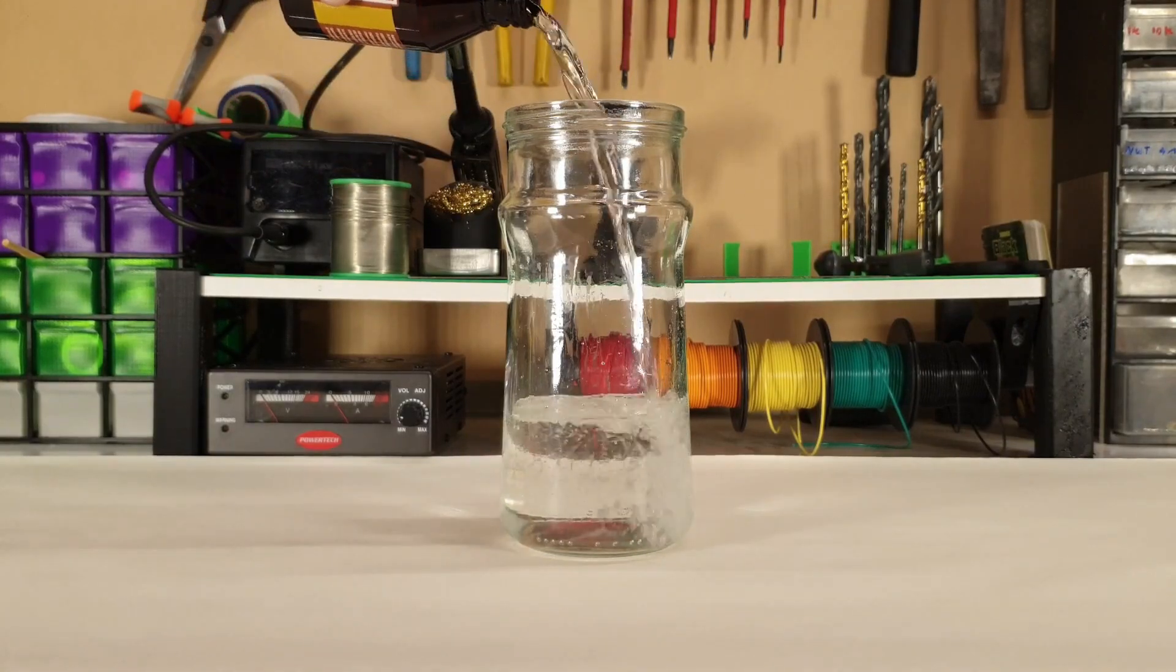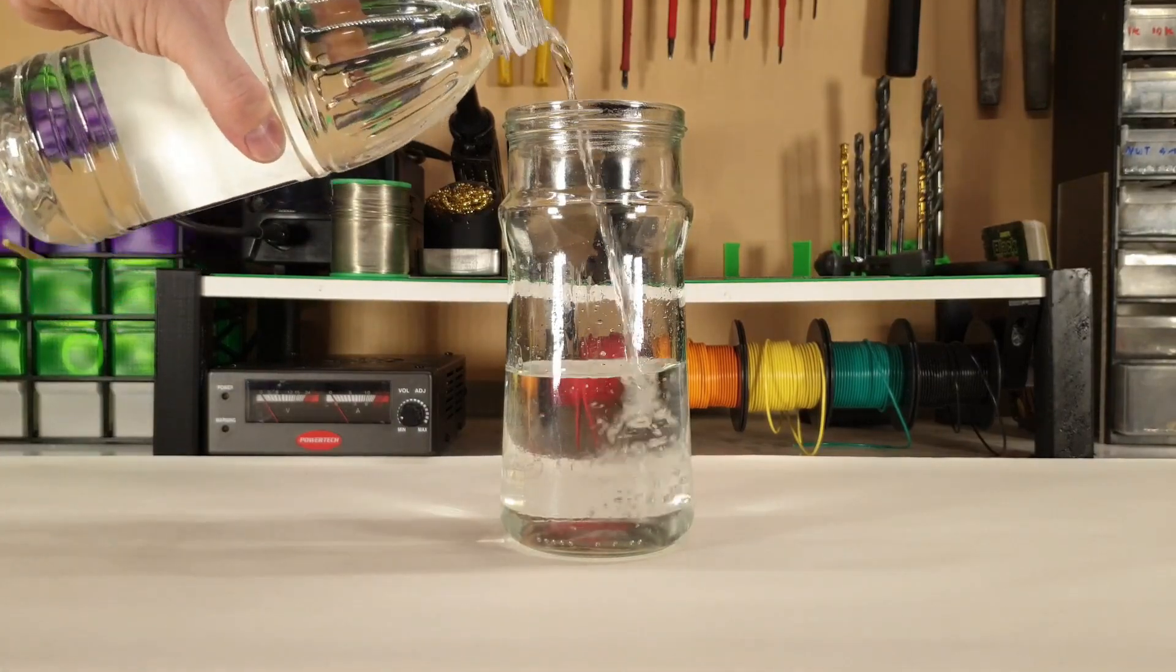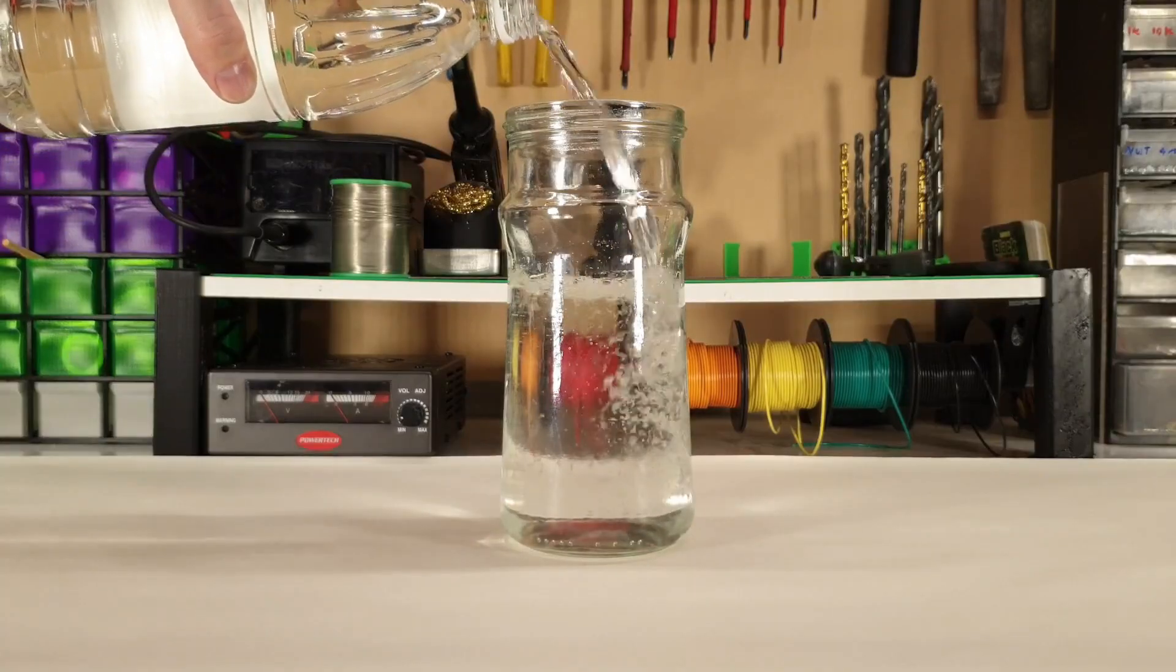This is a liquid that allows copper ions to flow from our scrap copper, which is called an anode, to the part that we intend to copper plate, which is called the cathode.